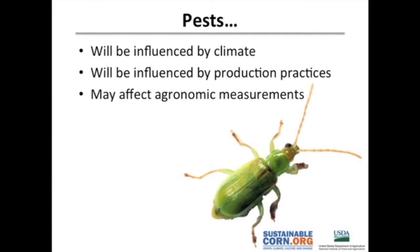To summarize: pests can be influenced by climate, they can be influenced by production practices perhaps in response to climate, and they can affect the agronomic measurements we're taking as we try to understand what's going on.